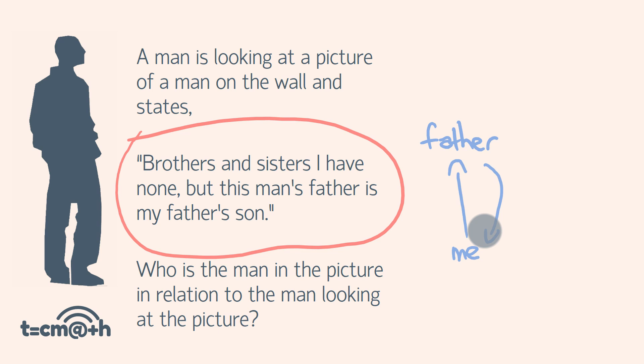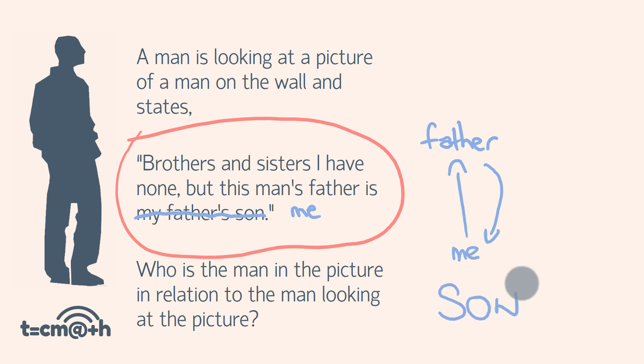Brothers and sisters I have none, but this man's father is my father's son — this can be rewritten. If I know my father's son is me, then: this man's father is me. So if I'm saying this man's father is me, who am I the father of? I'm the father of my son. So this is talking about my son — or, in relation to this guy here, he is looking at a picture of his son. So you're probably noticing a bit of a pattern here. Let's see how you go on the third riddle.